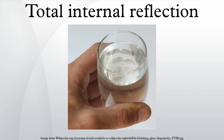The critical angle is the angle of incidence above which total internal reflection occurs. The angle of incidence is measured with respect to the normal at the refractive boundary. Consider a light ray passing from glass into air — the light emanating from the interface is bent towards the glass. When the incident angle is increased sufficiently, the transmitted angle reaches 90 degrees, at which point no light is transmitted into air.